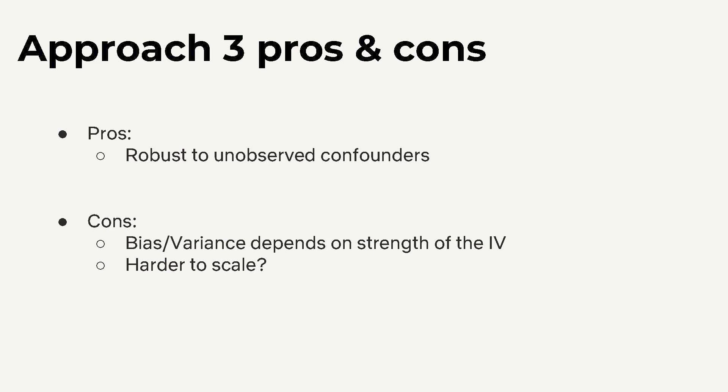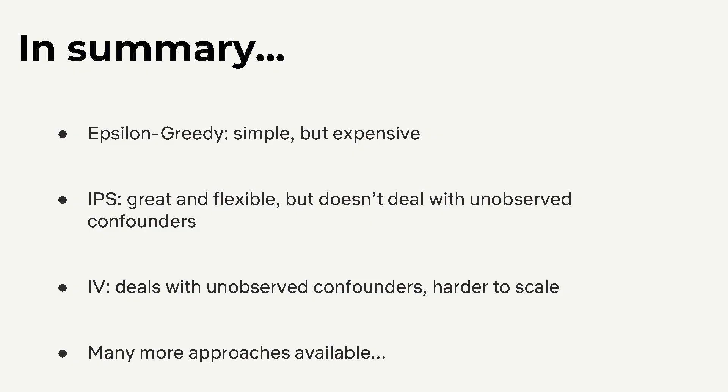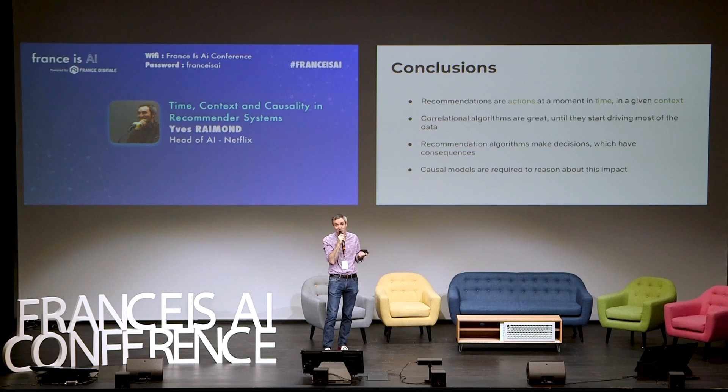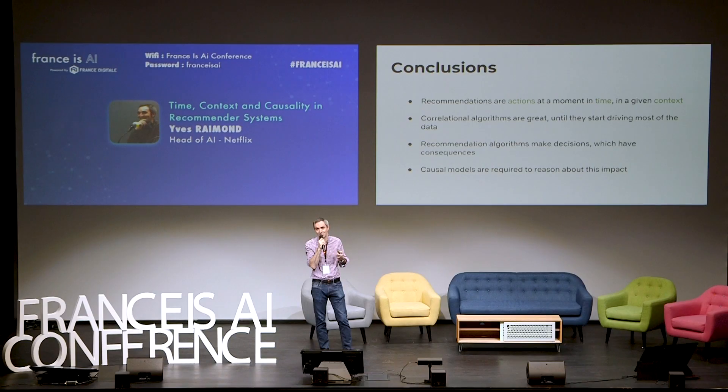The main pro of instrumental variable approaches is robustness to unobserved confounders. The con is that bias and variance depend on the strength of your instrument. To summarize: Epsilon Greedy — simple but expensive. Propensity methods — great and flexible but don't handle unobserved confounders. Instrumental variables — handle unobserved confounders but harder to scale. In conclusion: recommendations are actions which trigger reactions at a moment in time in a given context. Correlational algorithms are great until they start driving most of the traffic — or rephrased, they're great until you actually deploy them. Recommendation algorithms make decisions with consequences that are important to model so you can undo the resulting bias as much as possible.